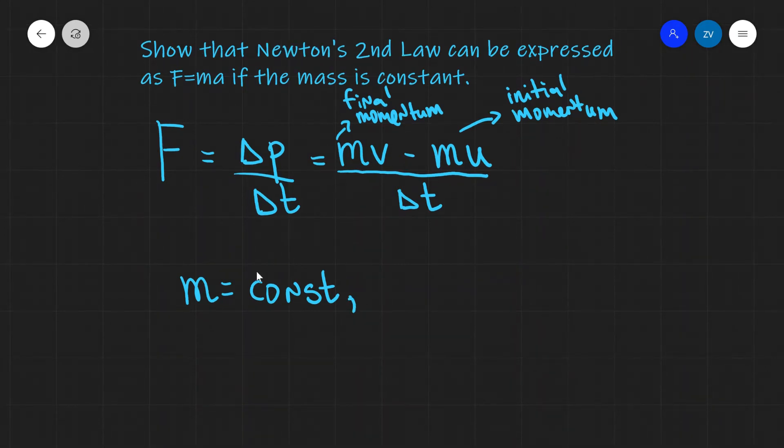So if the mass is constant, we can write down that F will be equal to the mass times v take away u, divided by delta t.